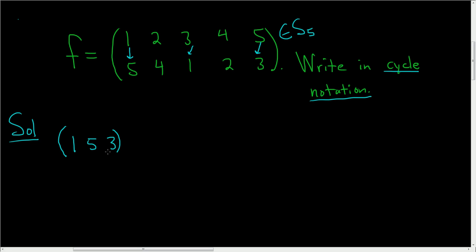So we have two numbers left to deal with: 4 and 2, so parentheses 4. 4 goes to 2, so we put the 2 down and then where does 2 go? Well 2 goes back to 4, so we close the parentheses and that's it.